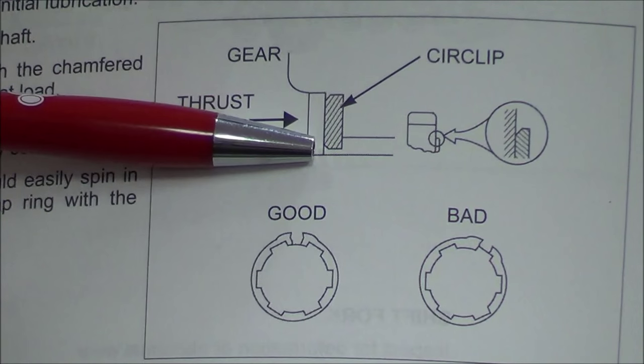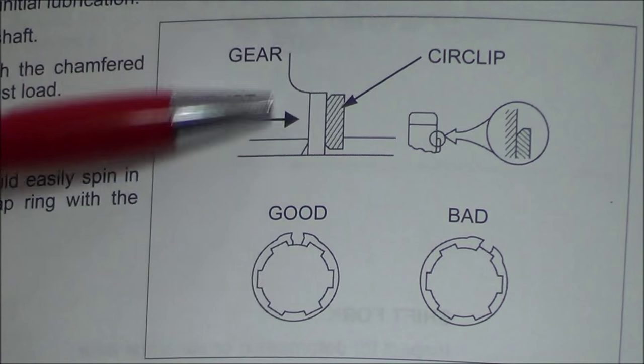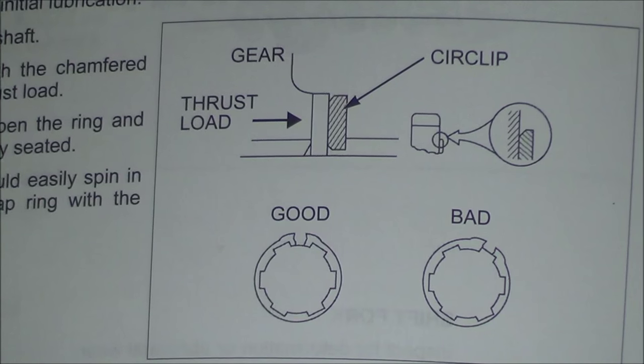If we put this the other way and we have that chamfered edge against that, when we push a thrust load on this, the circlips can walk off and then create havoc in there. So we don't want that.